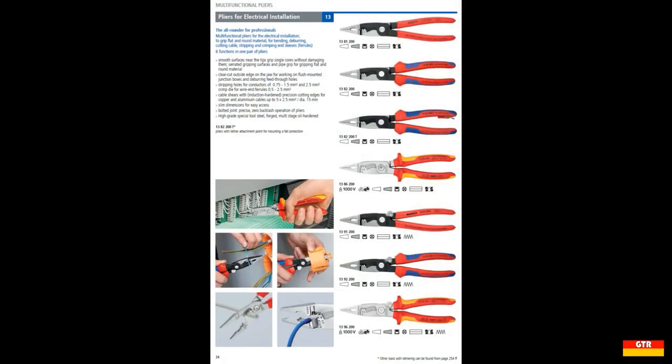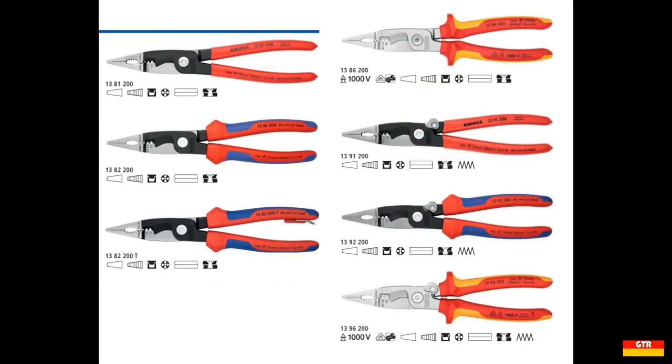Just like many of KNIPEX pliers, there are several variations on the base model that include different handle styles, accessories, and surface finishes. The second two digits in the model number indicate the handle and finish style, with 81 being plastic coated handles, 82 with two component handles, 86 with chrome plated and insulated handles, 91 being plastic coated handles with a spring-loaded joint, 92 being two component handles with a spring-loaded joint, and 96 being chrome plated insulated handles with a spring-loaded joint.